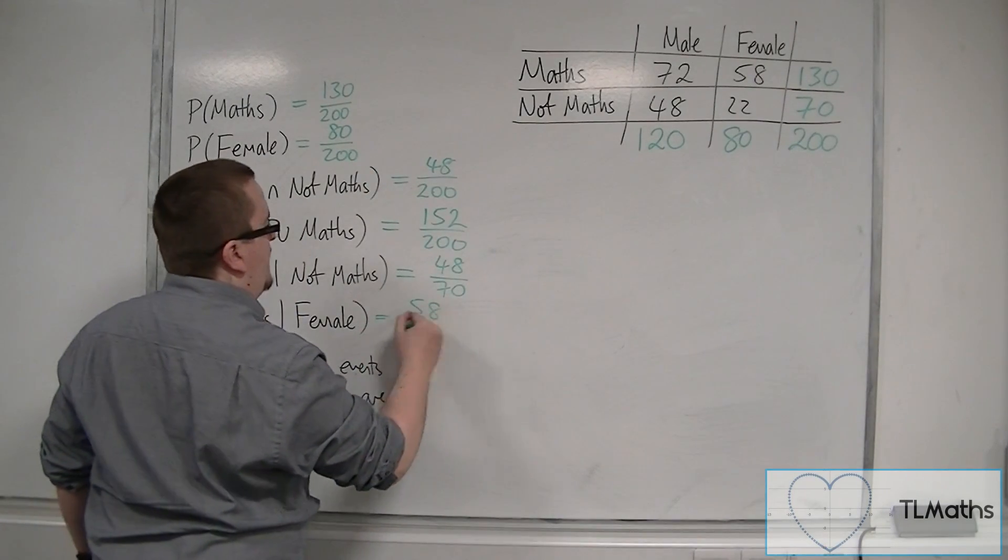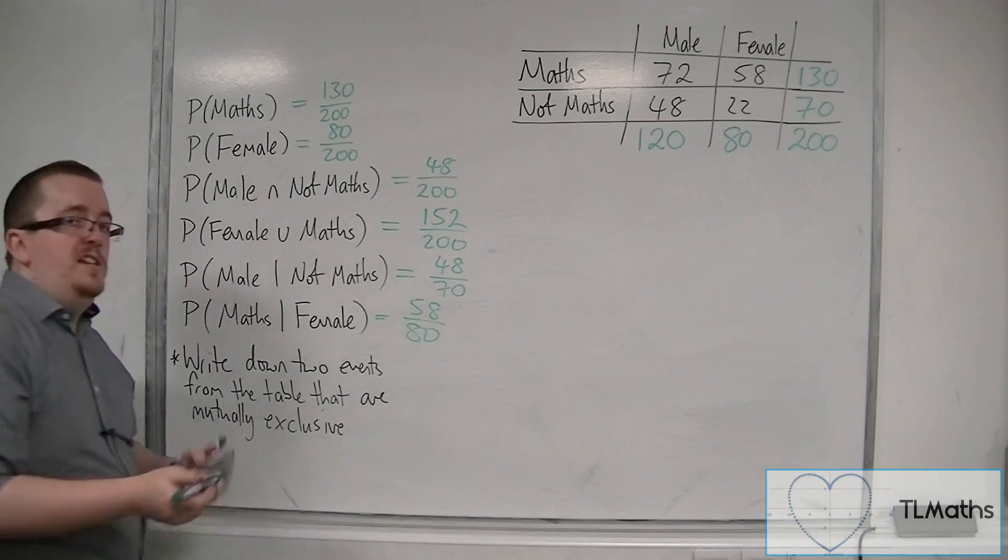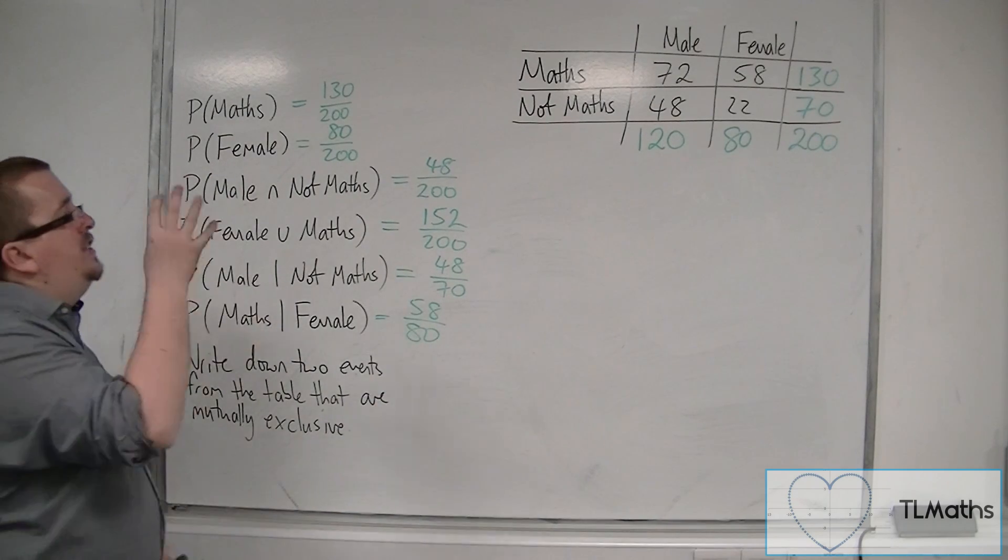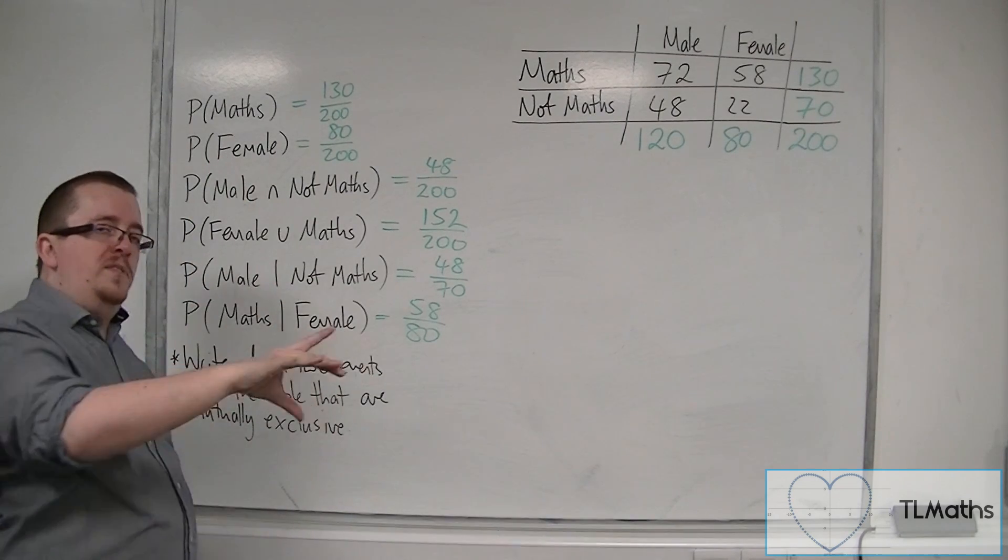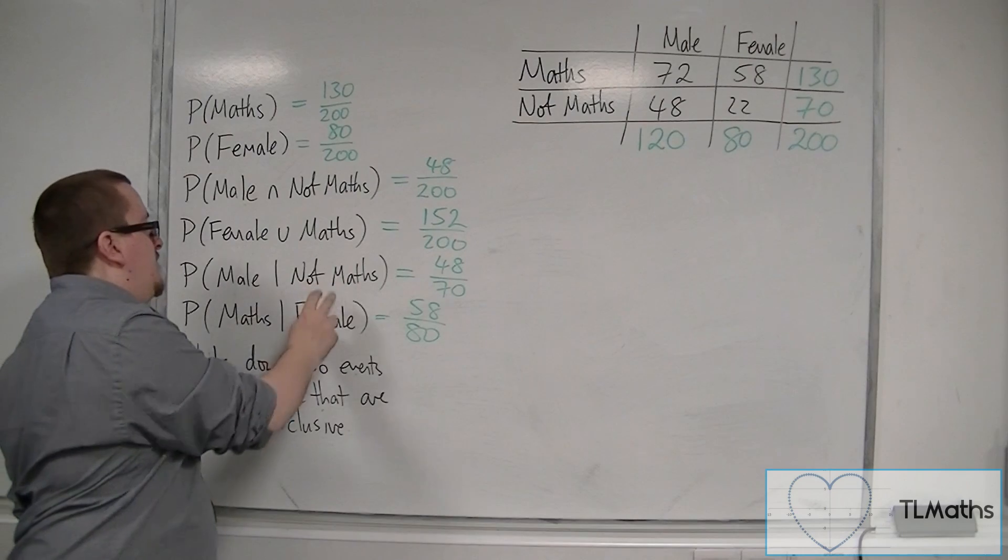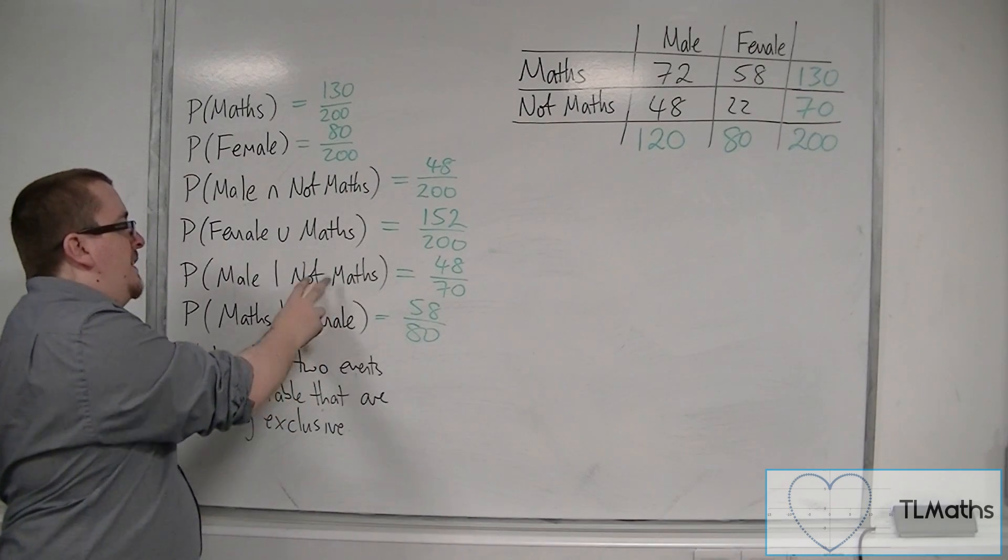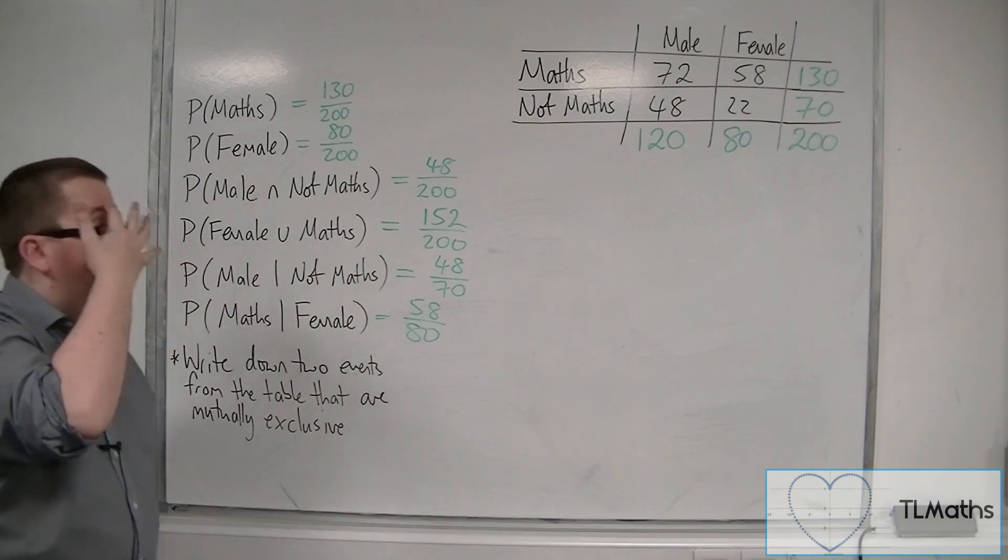So effectively, when you've got conditional probabilities on a two-way table, you're effectively just looking at a particular column or a particular row. And that's based on this one here, the given that probability.